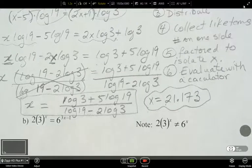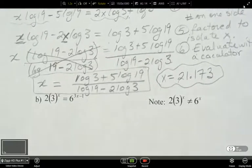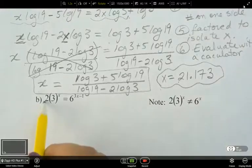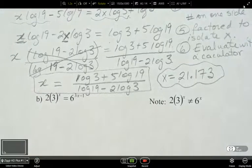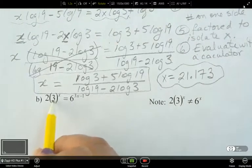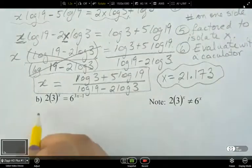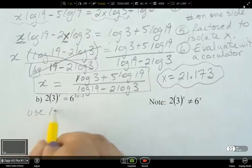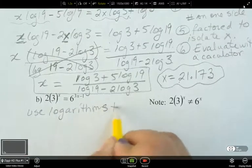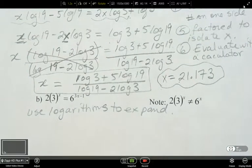And now our last example here where it says 2 times 3 to the power of x equals 6 to the power of (3x-1). And please be careful here, folks. Do not multiply this 2 with this 3. Is it because of the order of operations? And also, the exponent, this x, is just to this 3. It's not to this 2. So what we're going to do here is we're going to use logarithms to expand.